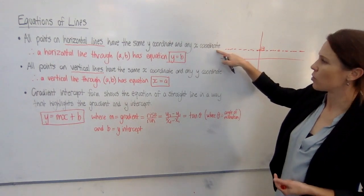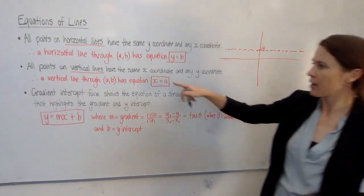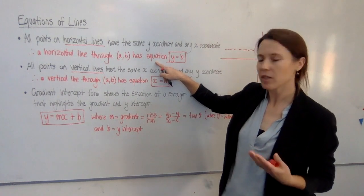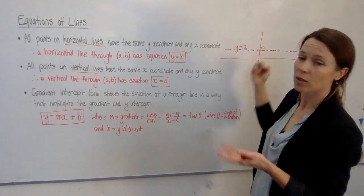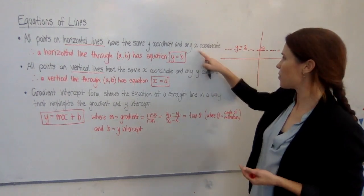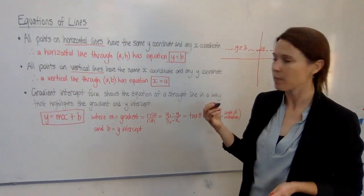They can have any x-coordinate. So it makes sense that when we write down the equation of this line, we really just have to define what that y-value is. In this case, this line would be y equals 2. And x can be anything, so you really don't need to even specify it.